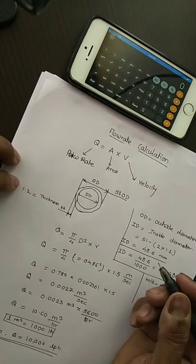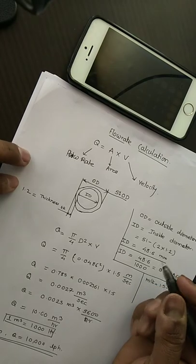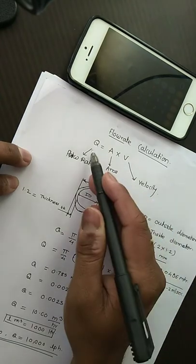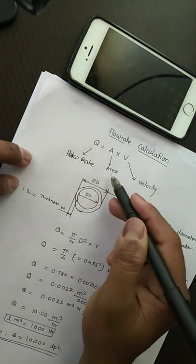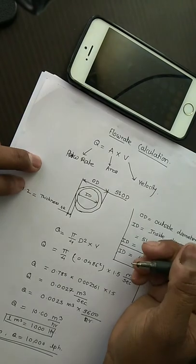Today we will see how to calculate flow rate. We have the formula Q = Area × Velocity, where Q is the flow rate, A is the area, and V is the velocity. In dairy industries or food industries...